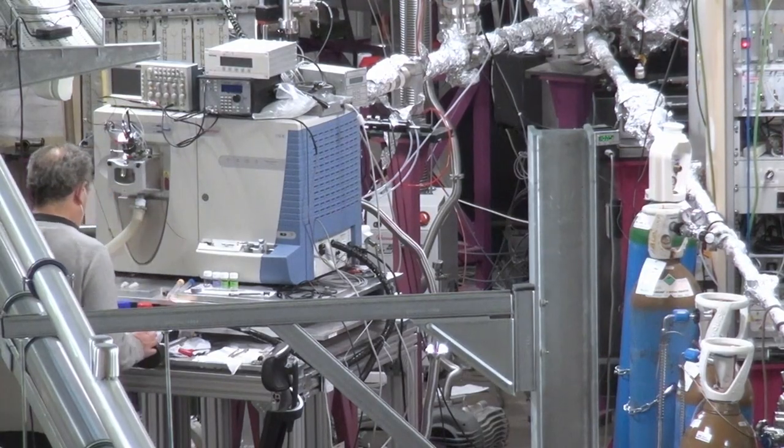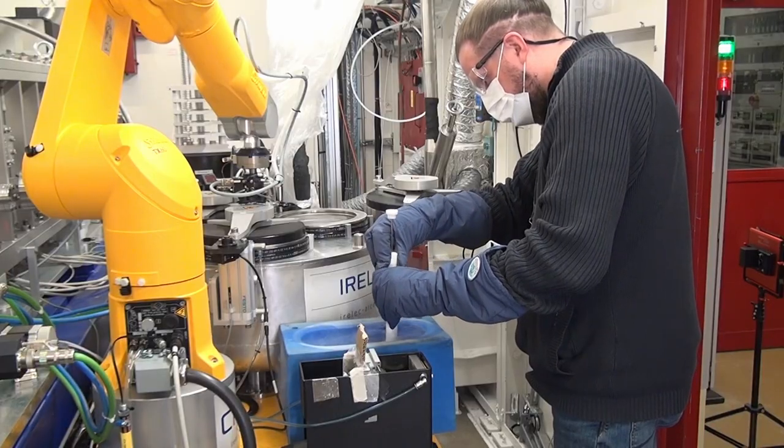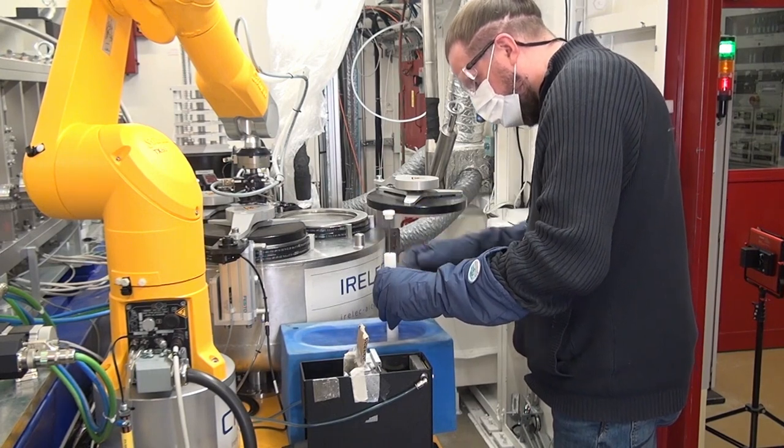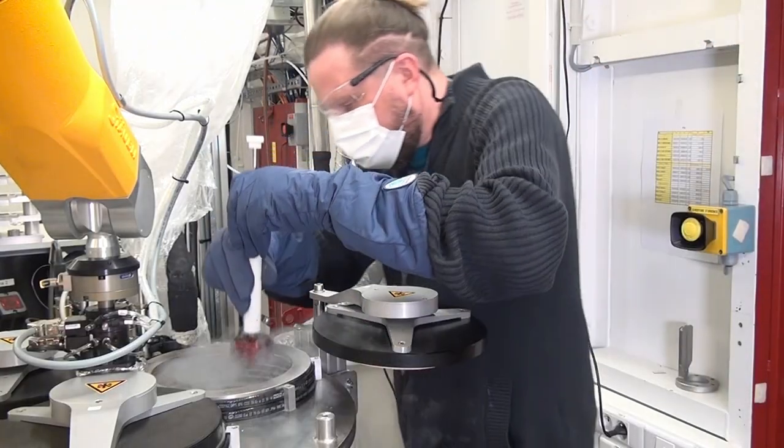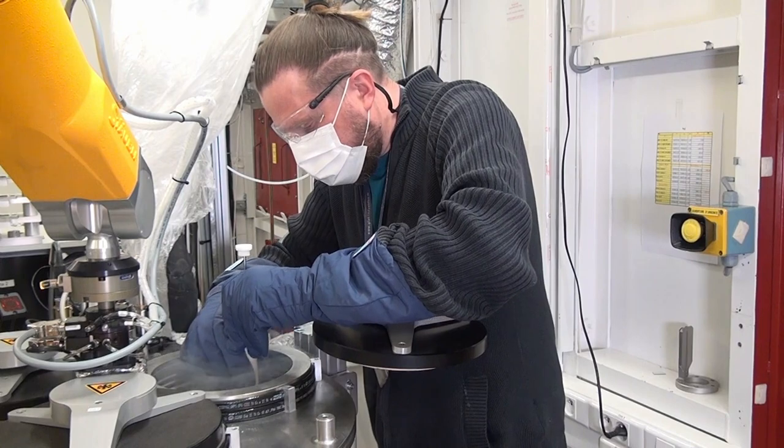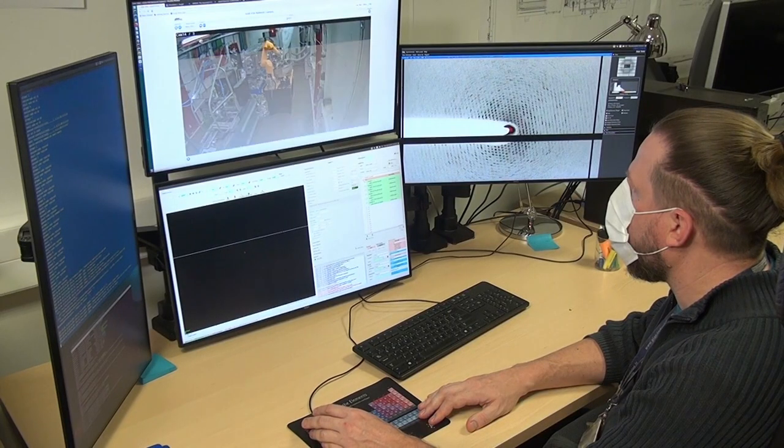Dozens of beamlines serve the many experimental stations where inanimate materials such as silicon or concrete are studied, but also biological samples such as bacteria or cells.